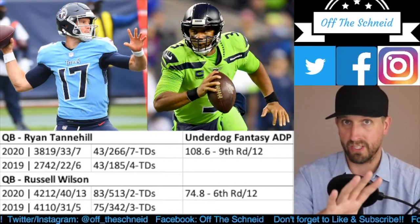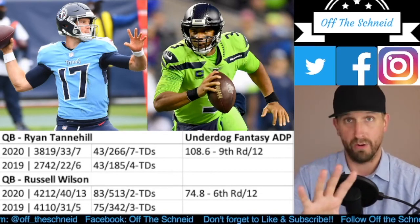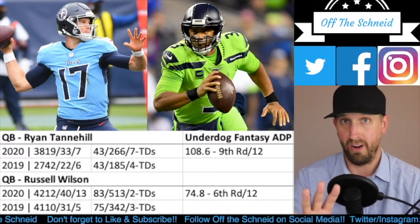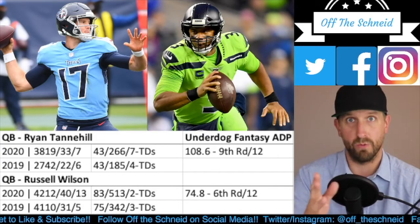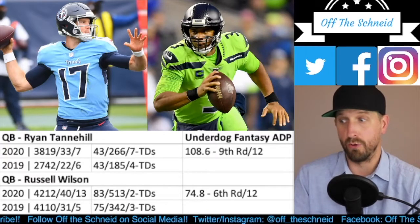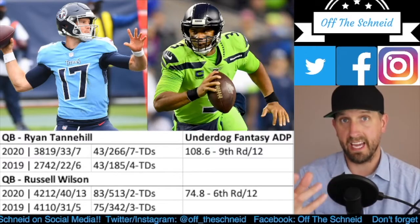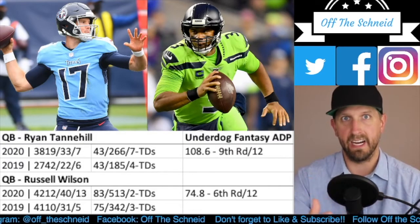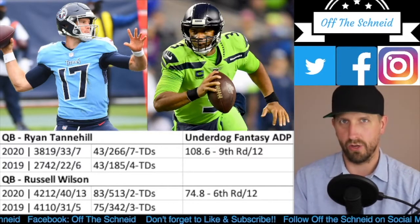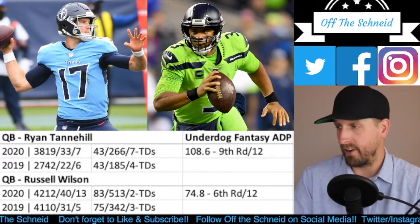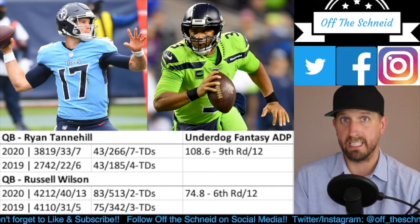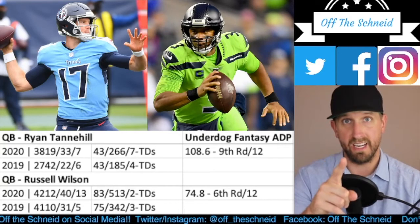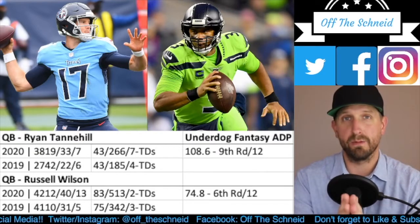Don't put words in my mouth — I'm not saying Tannehill is a better quarterback than Russell Wilson, because he's absolutely not. But in fantasy, especially best ball or redrafts, Ryan Tannehill is certainly right there and deserves a much closer ADP to Wilson. You've got Julio Jones and A.J. Brown over DK Metcalf and Tyler Lockett, and the supporting cast in Tennessee is better than Seattle. Tannehill is a guy people are still sleeping on — every day of the week, give me Ryan Tannehill over Russell Wilson.